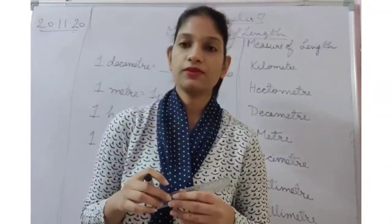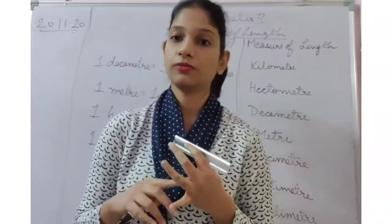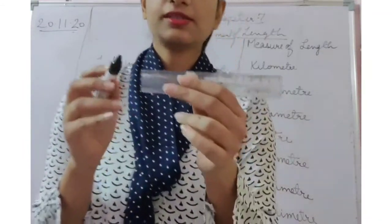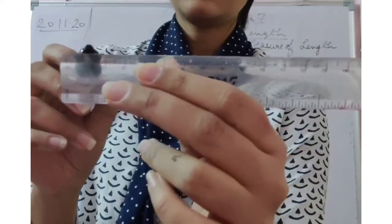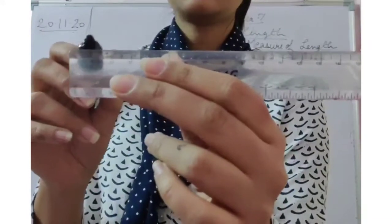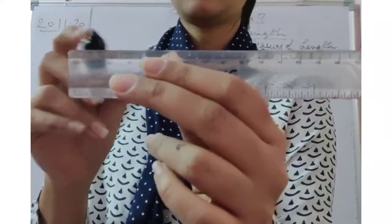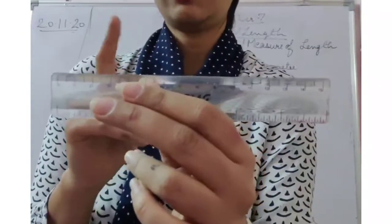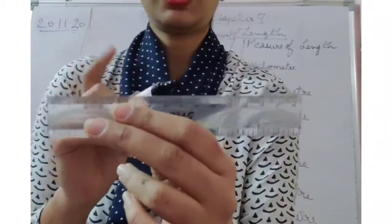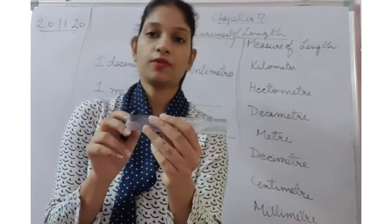You are all pretty familiar with the units millimeter, centimeter, meter, and kilometer. Let's quickly revise these units. Millimeter is basically these 10 lines between 0 and 1 on a ruler — they represent the millimeters. These 10 millimeters together make up 1 centimeter. So you know about millimeter and you know about centimeter.